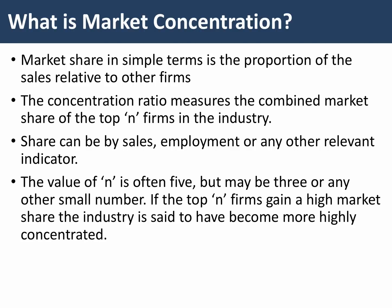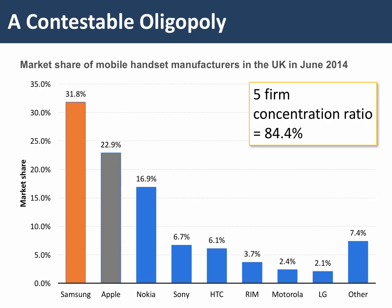If we took the top five firms in an industry and calculated their combined market share, we'd get what's called the C5 concentration ratio. Any C5 ratio of more than 60% would tell us that the industry was an oligopoly. Here's an example of the C5 ratio using some data from the mobile phone industry in the UK in the summer of 2014.